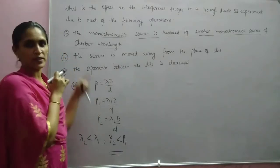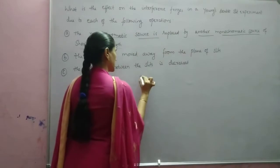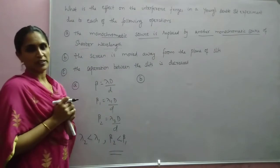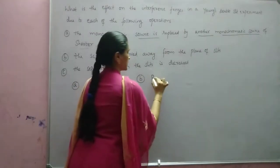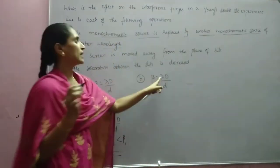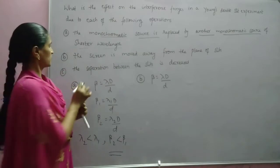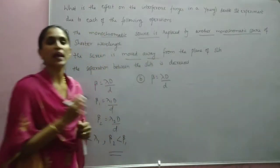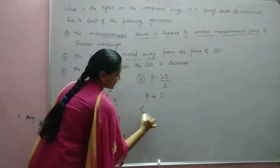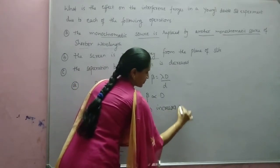For the second case, the screen is moved away from the plane of slits. In the expression beta equals lambda·D/d, here lambda remains the same and d remains the same. Only capital D increases when the screen is moved away. So beta is directly proportional to D; if D increases, beta increases.